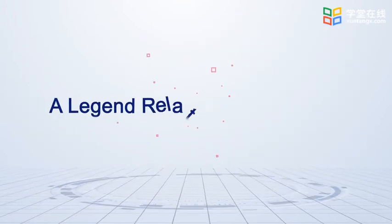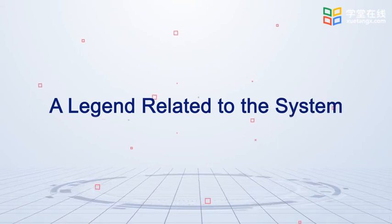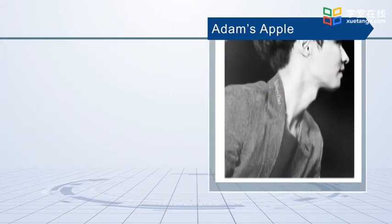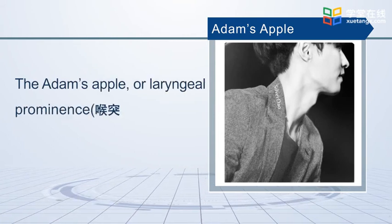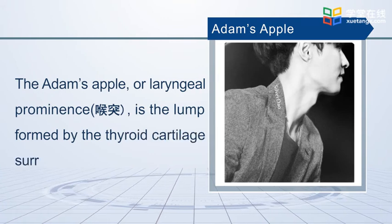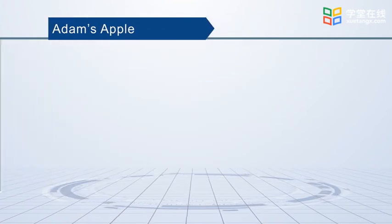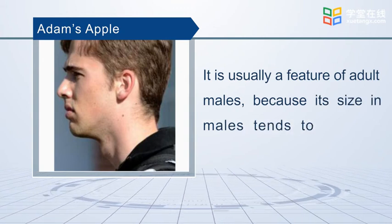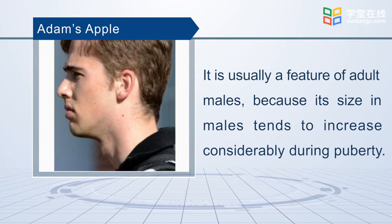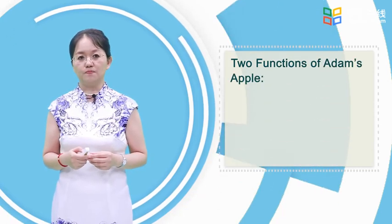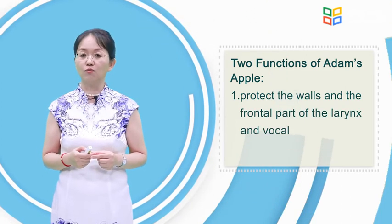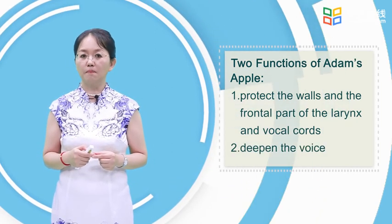Now I'd like to share a legend with you related to this system. It is Adam's apple. The Adam's apple, or laryngeal prominence, is a lump formed by the thyroid cartilage surrounding the larynx. It is usually a feature of adult males because its size in males tends to increase considerably during puberty. Adam's apple has two functions: first, to protect the walls and the frontal part of the larynx and the vocal cords; and second, to deepen the voice.